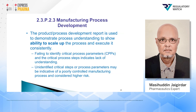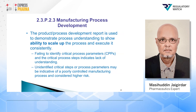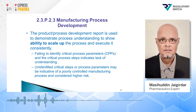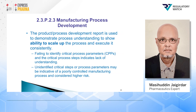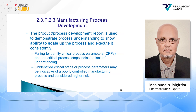Under section 3.2.P.3.2.3 of the submission application, the manufacturing process development and product and process development report is used to demonstrate process understanding and show the ability to scale up the process and execute it consistently. Failing to identify critical process parameters (CPPs) and critical process steps indicates a lack of understanding.